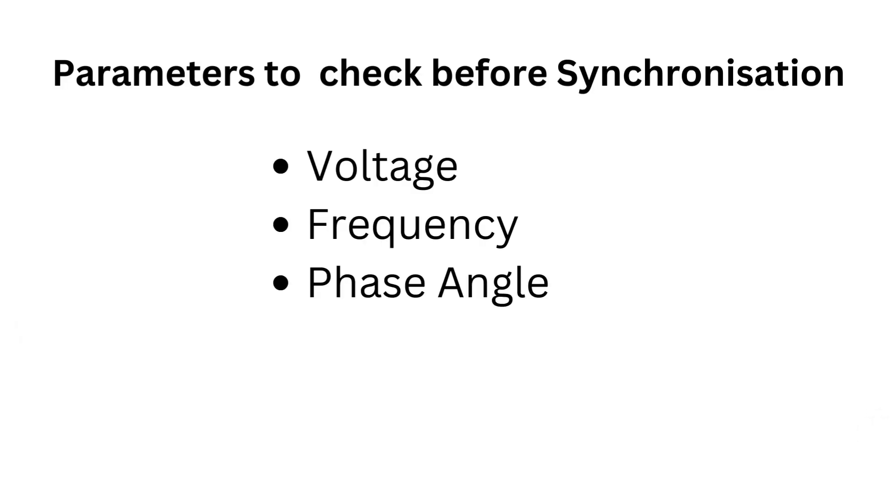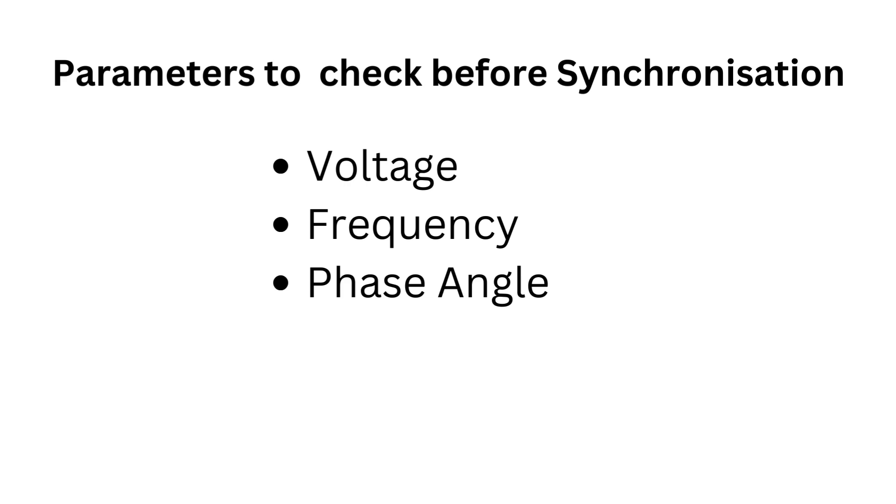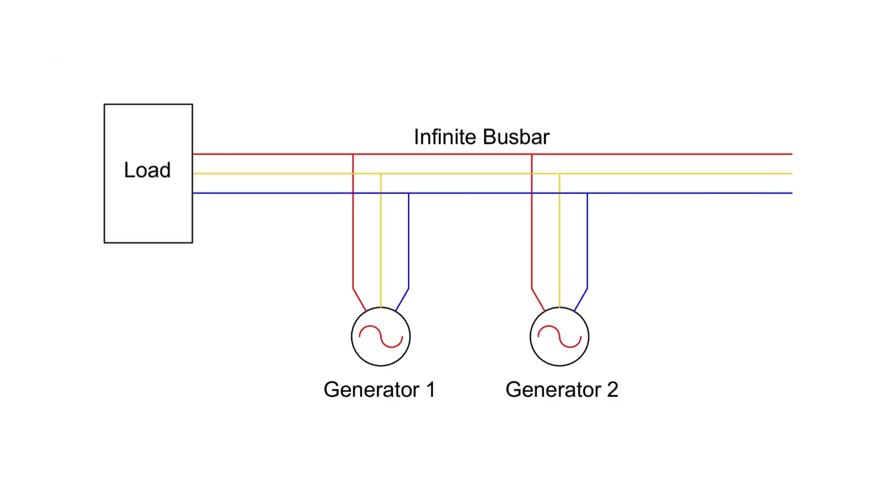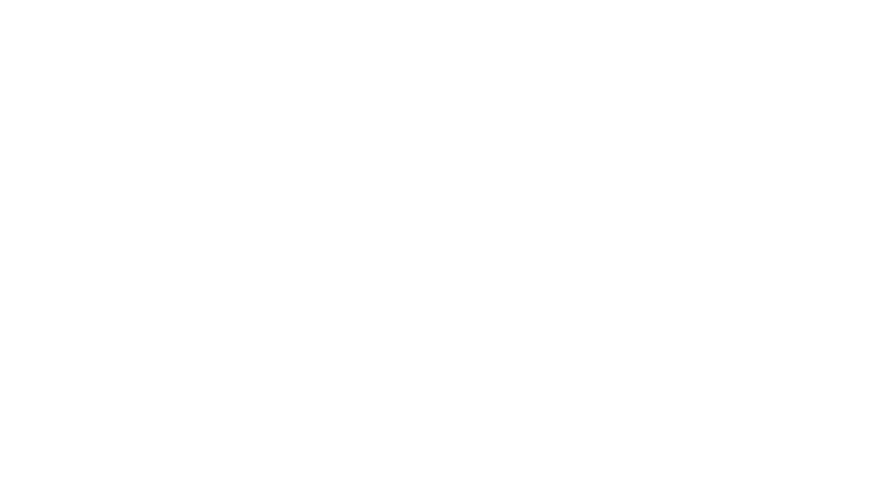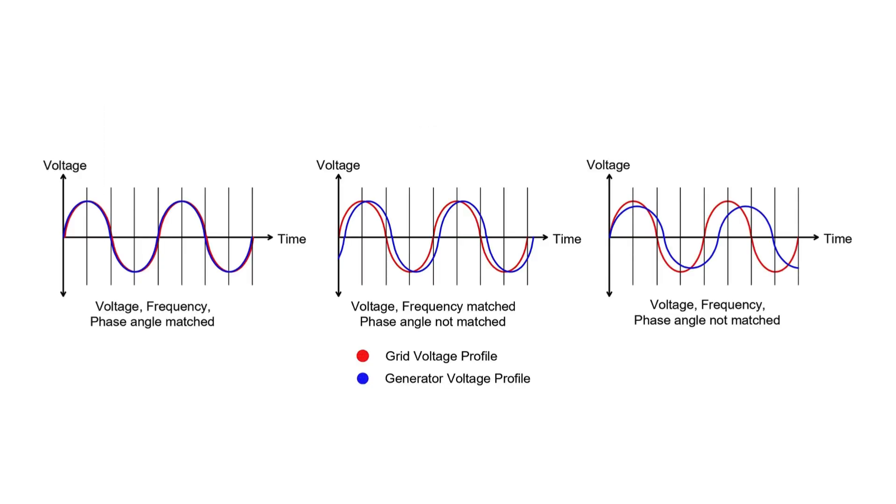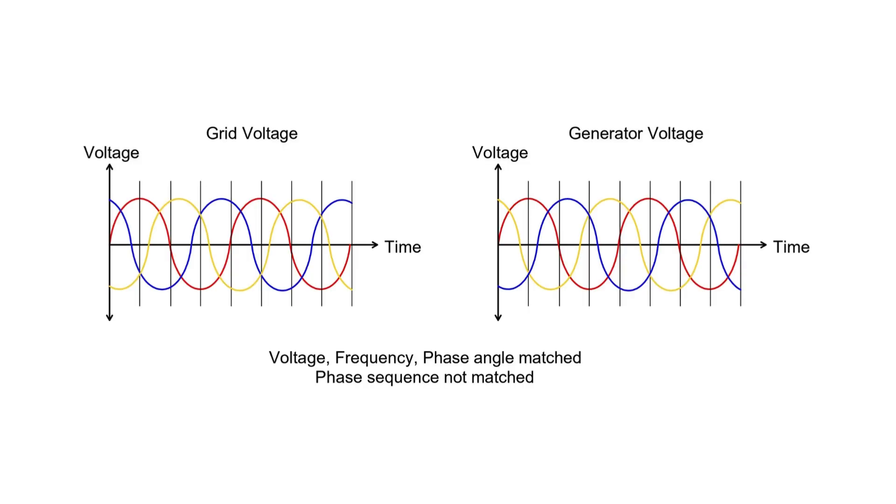Now, why do we consider these parameters like voltage, frequency and phase angle when connecting a generator to the grid? Imagine two generators are operating in parallel with a load connected to their terminals and you need to connect a third generator in parallel. The first two are running generators and the one you're connecting is the incoming generator. The voltage profile of the incoming generator should match the running generators.